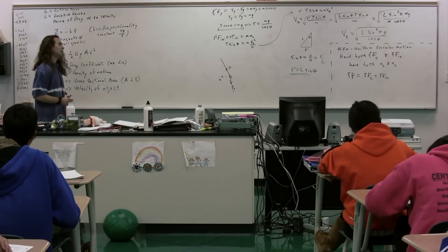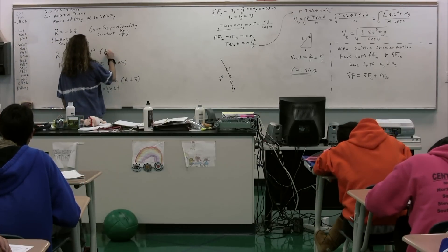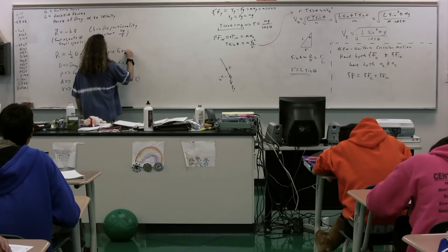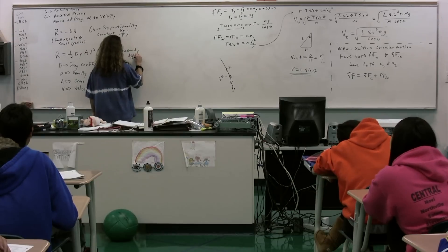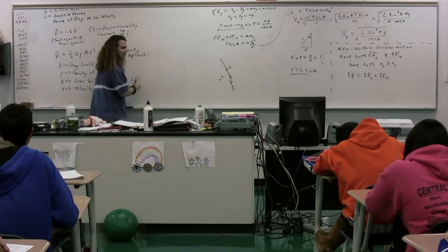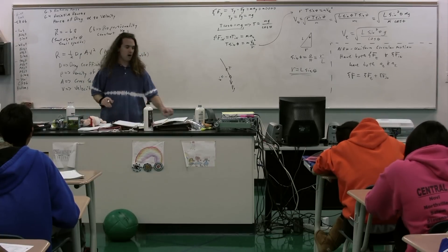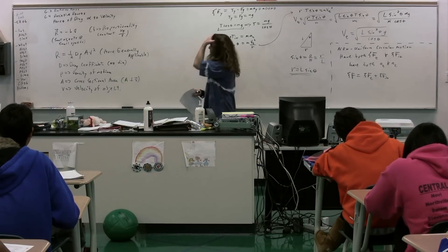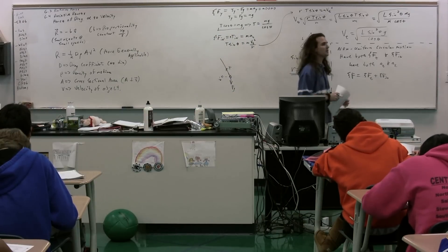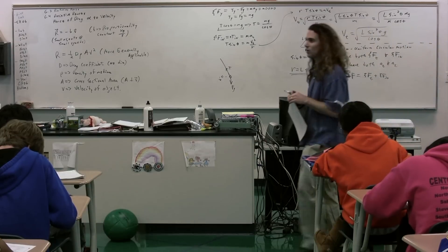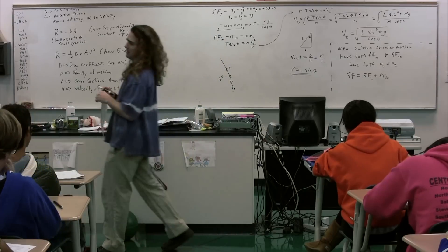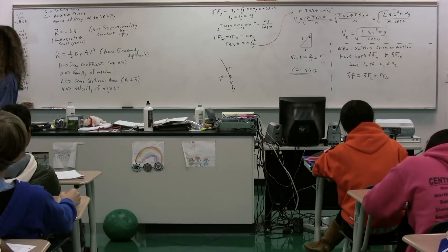And this last one, this velocity is just the velocity of the object. Now this one is more generally applicable. There are some times when we will simply approximate it as the resistance force equal to negative b times the velocity. But more often than not, the resistance force is going to be equal to one-half times the drag coefficient times the density of the medium times the cross-sectional area times the velocity squared.